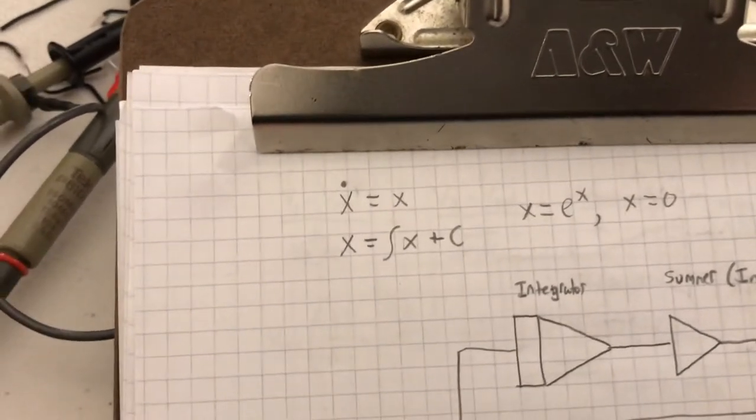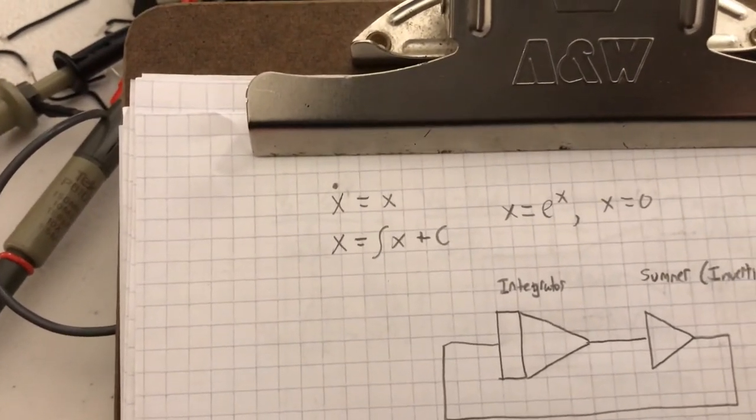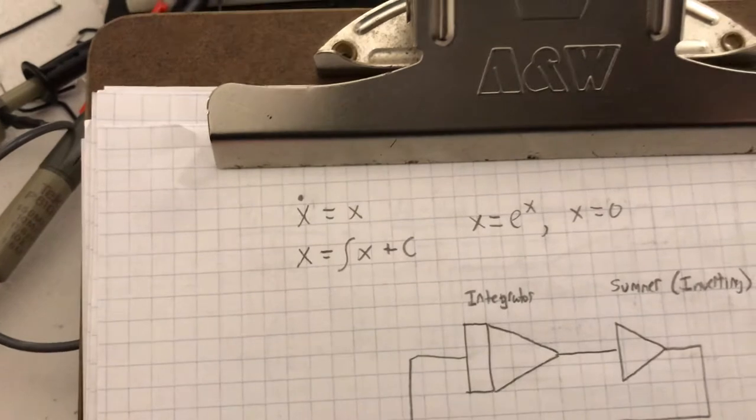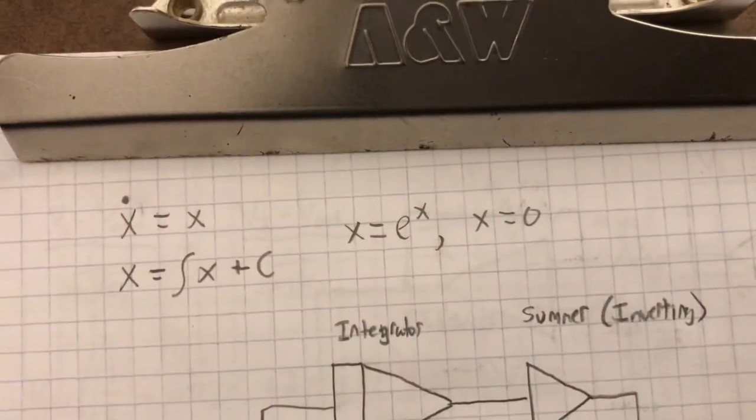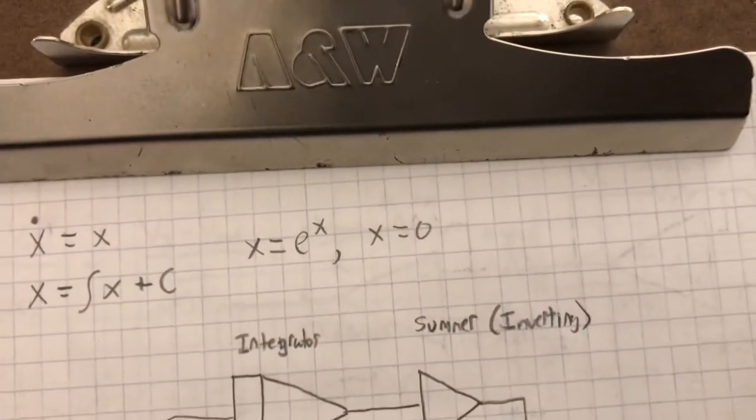You can also integrate both sides to get X equals the integral of X plus C. And the solution for this equation you can find analytically pretty easily, and it's just X equals e to the X, or the trivial case where X equals zero.